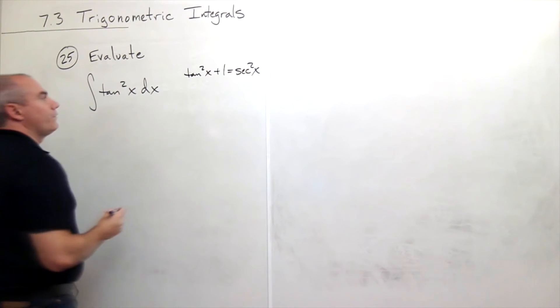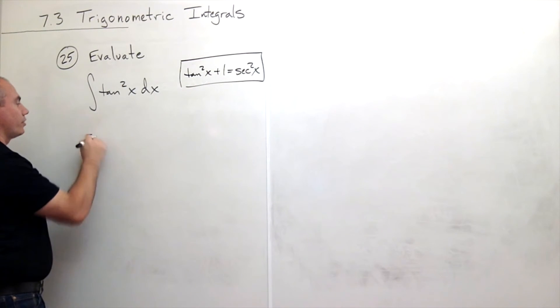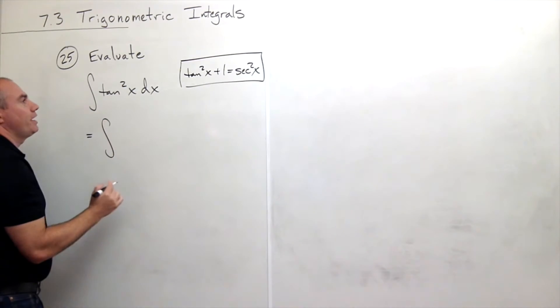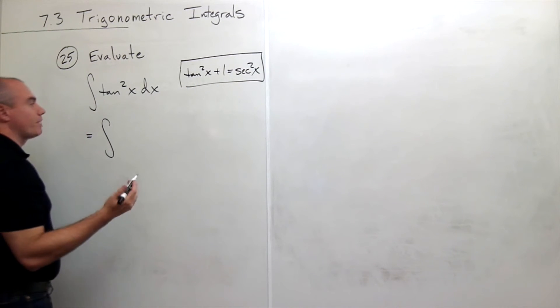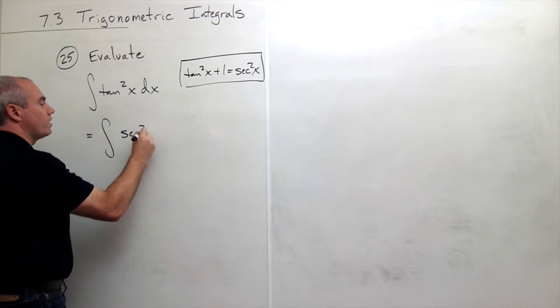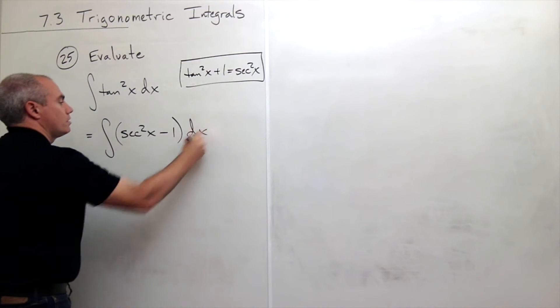Now if we know that this is true, then I could rewrite this integral using that information and I see that tangent squared of x is secant squared of x minus one. So this is just the integral of secant squared of x minus one dx.